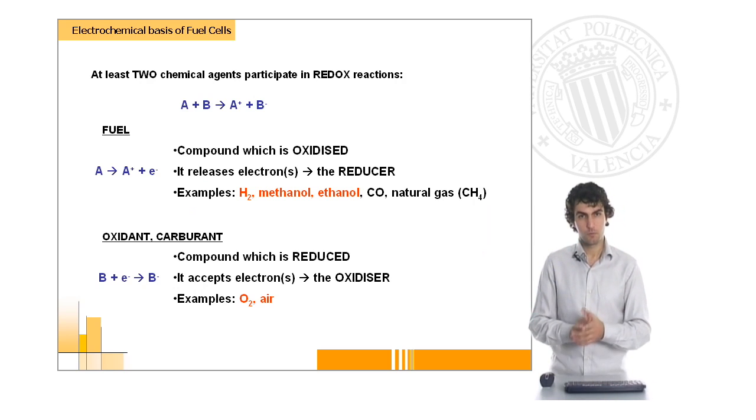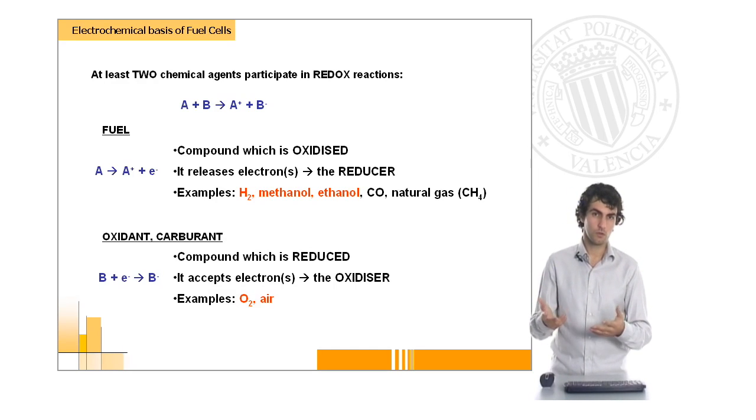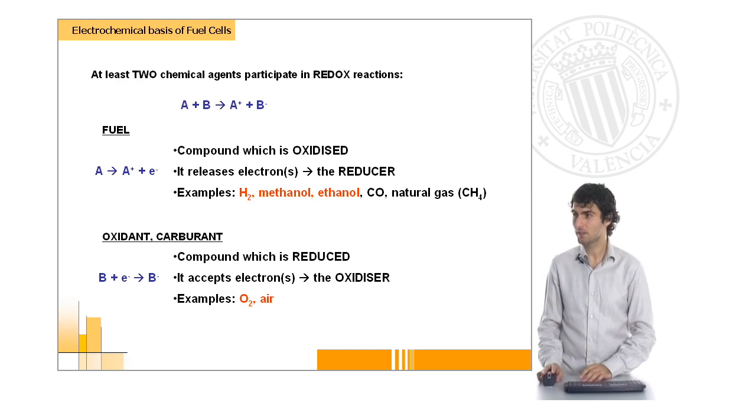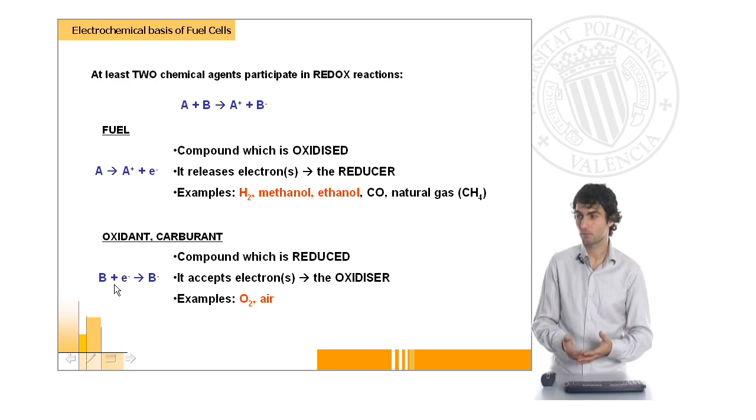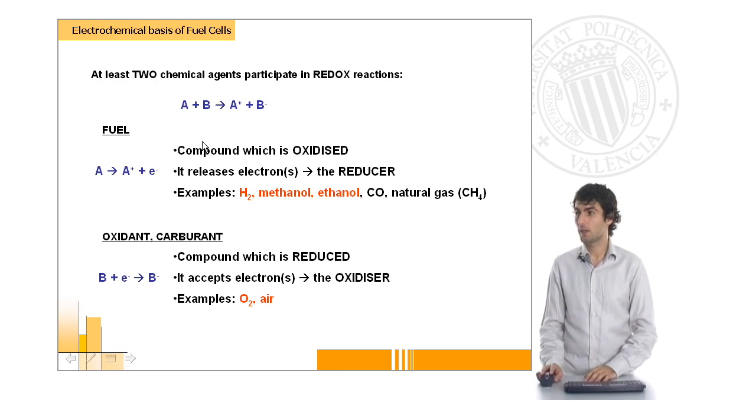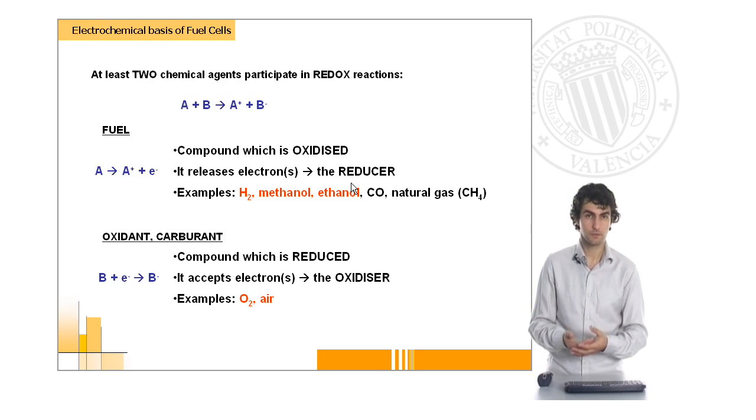At least two chemical agents must be involved in these redox reactions. The first one is the fuel, which is the compound that is going to be oxidized. This element will lose electrons and will oxidize. These electrons will be accepted by the oxidant, which is usually oxygen from the air. Fuel can be hydrogen, methanol, ethanol, or other components which can be oxidized by oxygen.